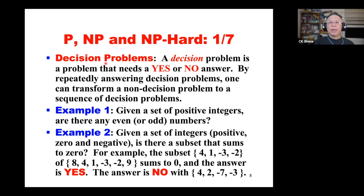For example, given an array of n elements, you pick the first one and ask: is this element the smallest? If yes, you put it in the first location of the output array, then ask if the next element is the second smallest, and so on. Even if the answer is no, you can ask whether the element is the second largest, third largest, etc. Eventually, asking n questions each with a yes or no answer solves the sorting problem. A decision problem is therefore fundamental in our discussion of P, NP, and so on.